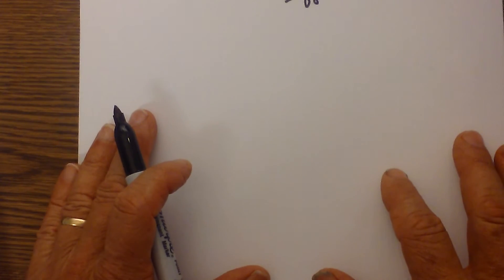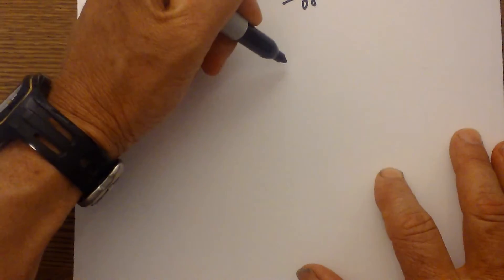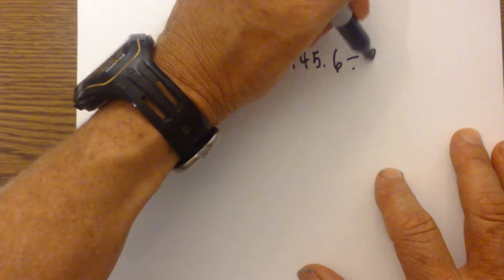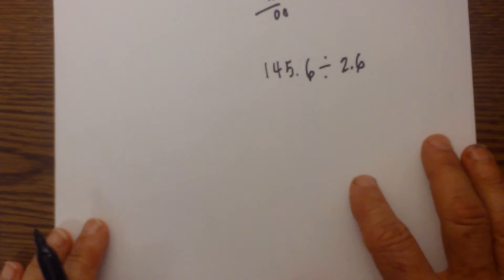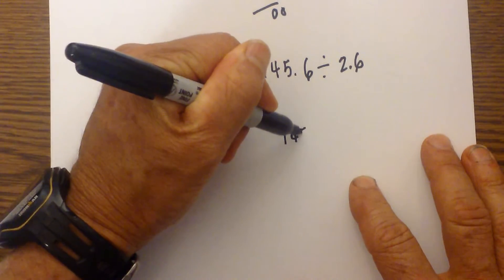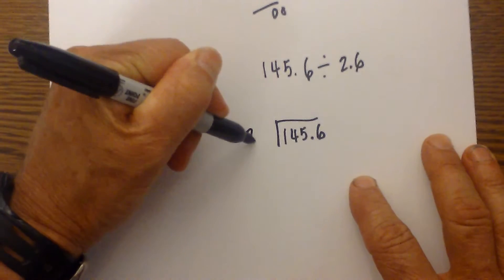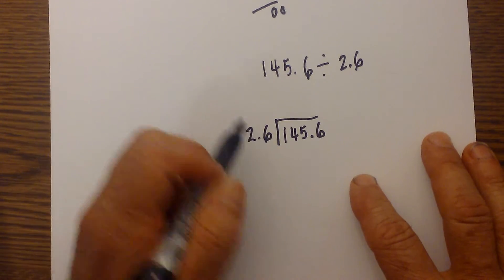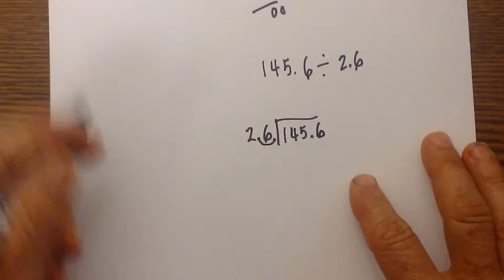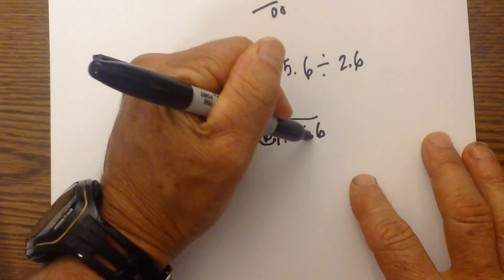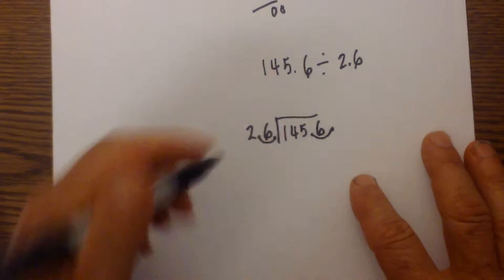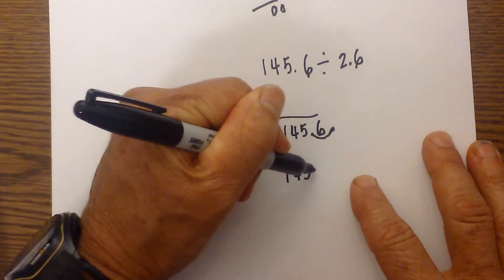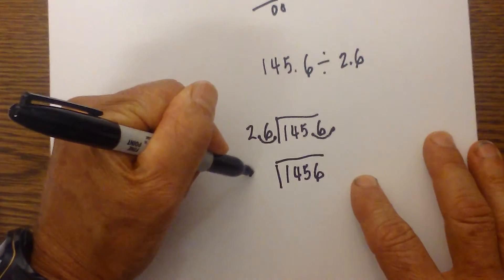Let's work another example with dividing with decimals: 145.6 divided by 2.6. I'm going to go ahead and rewrite that. Now that we have a decimal on the outside, or with the divisor, we need to get rid of the decimal by moving it one place to the right. But what we do to the divisor, we need to do to the dividend, so we move it one place to the right also. So 145.6 divided by 2.6 becomes 1456 divided by 26.